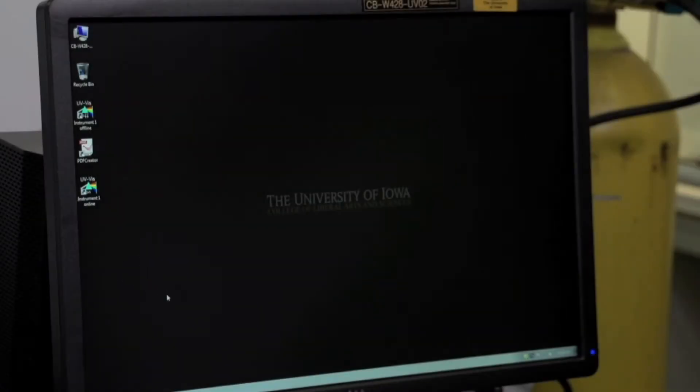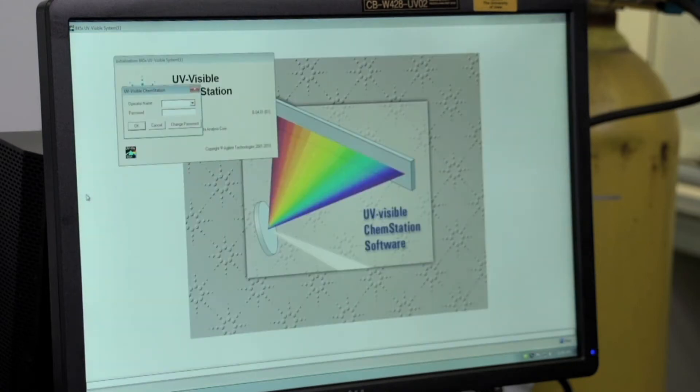To turn on the software, select the online version of the UV-Vis instrument. And when the dialog box prompting an operator name and password comes up, select cancel.